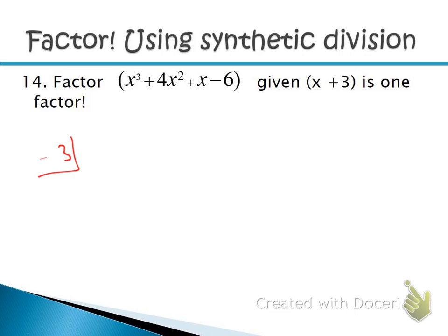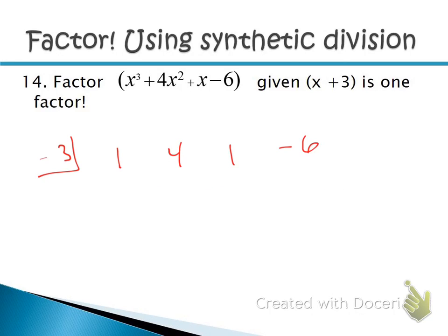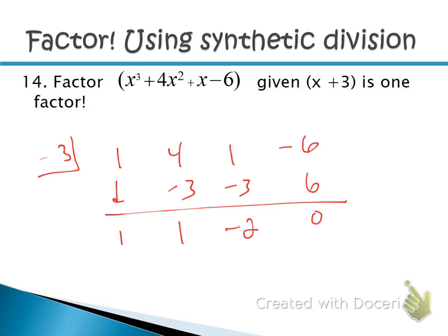Final practice: x + 3 is a factor, so put −3 in the tiny box. Coefficients are 1, 4, 1, −6. Bring down 1. Multiply up and add repeatedly. The remainder is 0, confirming x + 3 is a factor. The result is x² + x − 2. Factor that into (x + 2)(x − 1). So the three factors of x³ + 4x² + x − 6 are (x + 3)(x + 2)(x − 1).